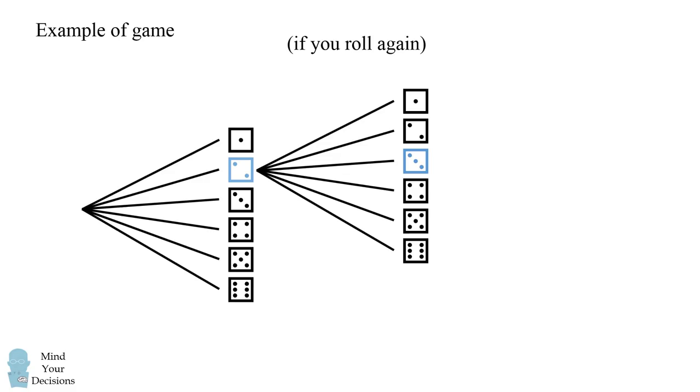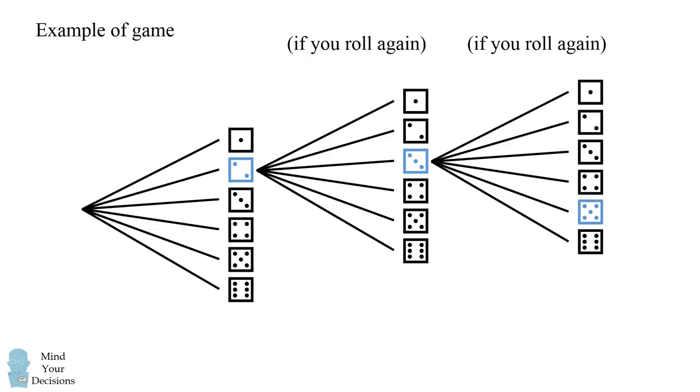So then you could get any of the six possibilities. And let's suppose you get the number three. You decide that three is too low of a value, so you decide to roll again. And on the third roll, you could get any of the six possibilities. Let's suppose you get lucky and you get a five. So you'll get paid five dollars.